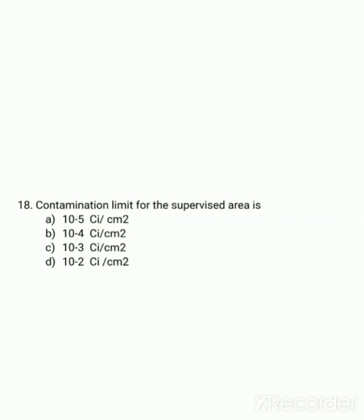The contamination limit for supervised areas: supervised areas are those in which we have to be very careful about radiation, so the contamination limit is 10⁻³ microcurie per centimeter squared. Note that all options listed show curie per centimeter squared, but the correct unit is microcurie per centimeter squared.